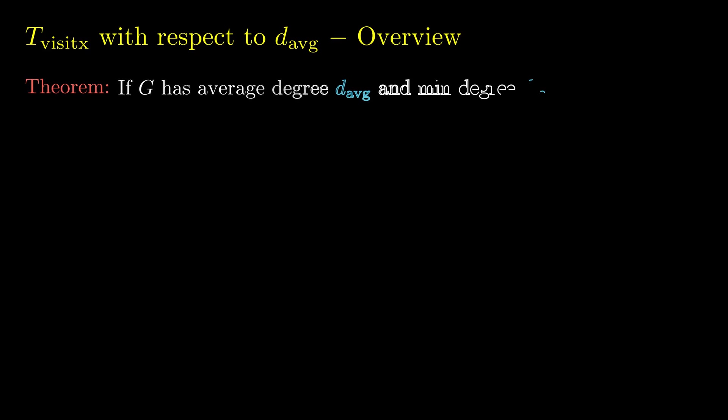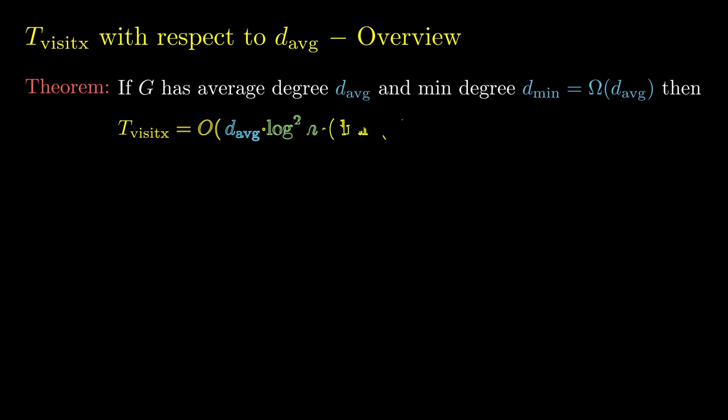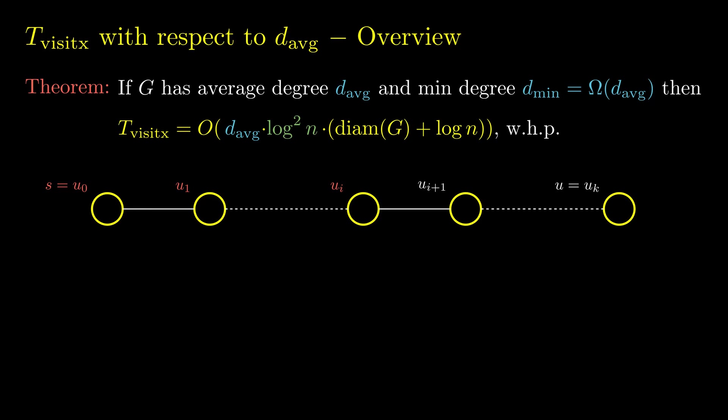We proceed to the proof of one of our main results: the bound on the broadcast time of visit exchange with respect to the average degree of the graph. We fix a vertex u at distance k from the source vertex and bound the number of rounds until u becomes informed with high probability via the shortest path from s to u — that is, all vertices on the shortest path become informed one by one. A union bound then proves the theorem.